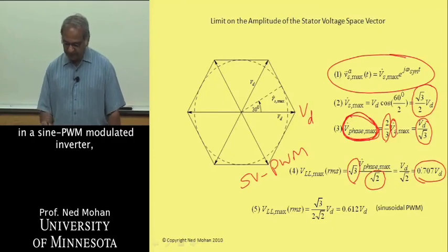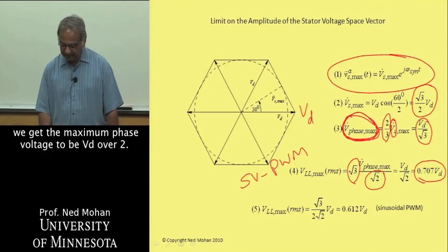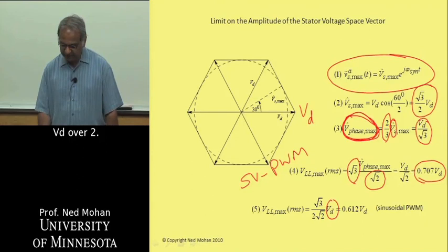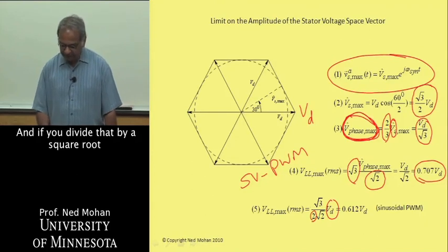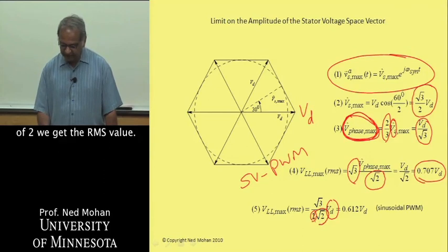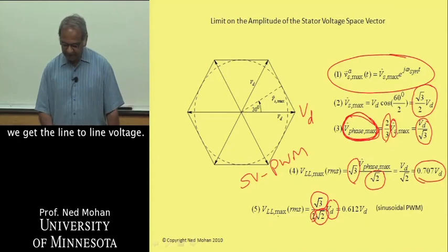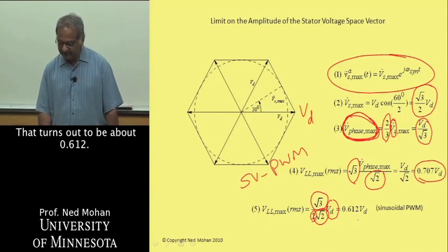Whereas if you look at what happens in a sine PWM modulated inverter, we get the maximum phase voltage to be VD/2. If you divide that by √2 we get the RMS value, if you multiply that by √3 we get the line-to-line voltage, and that turns out to be about 0.612.